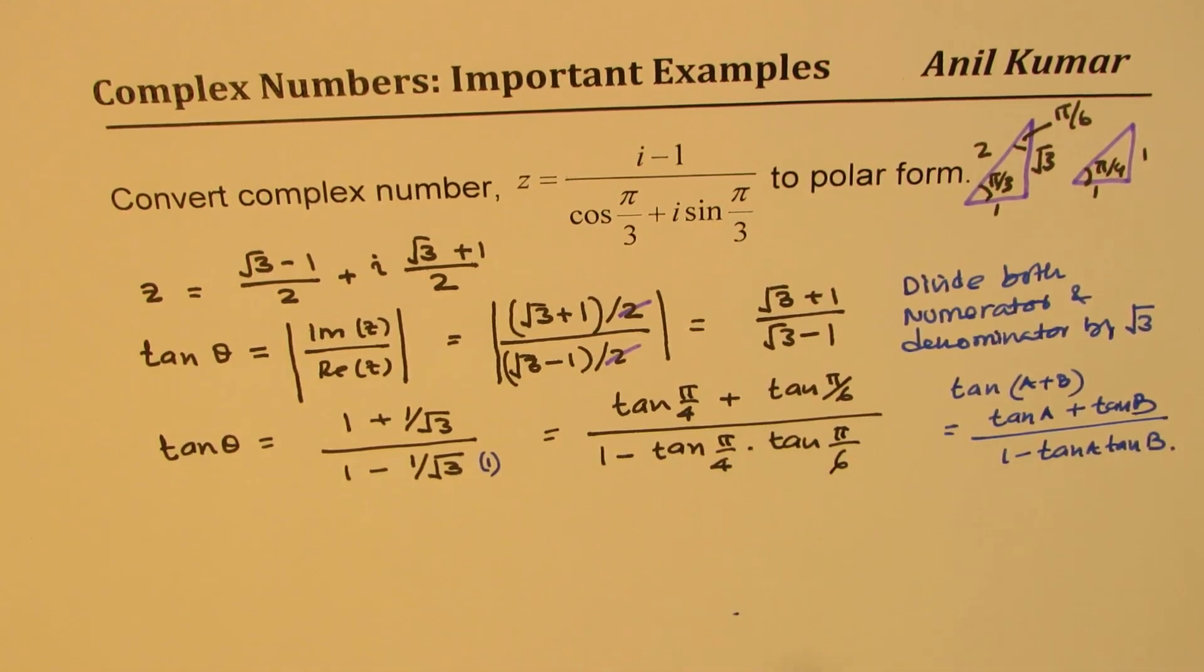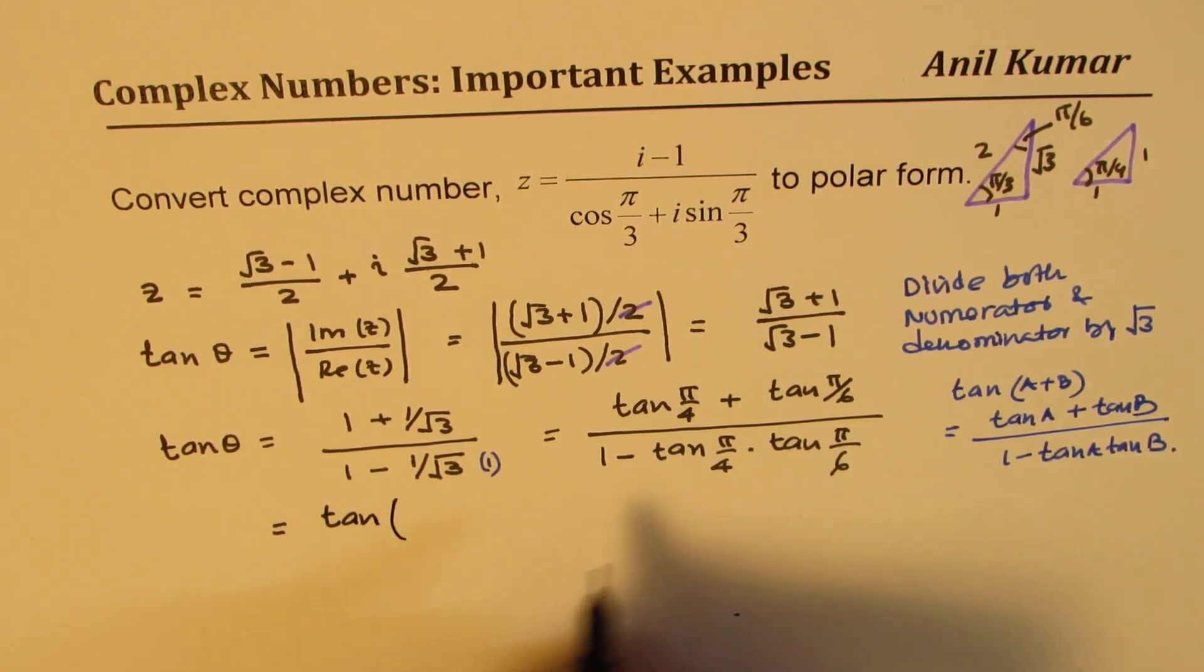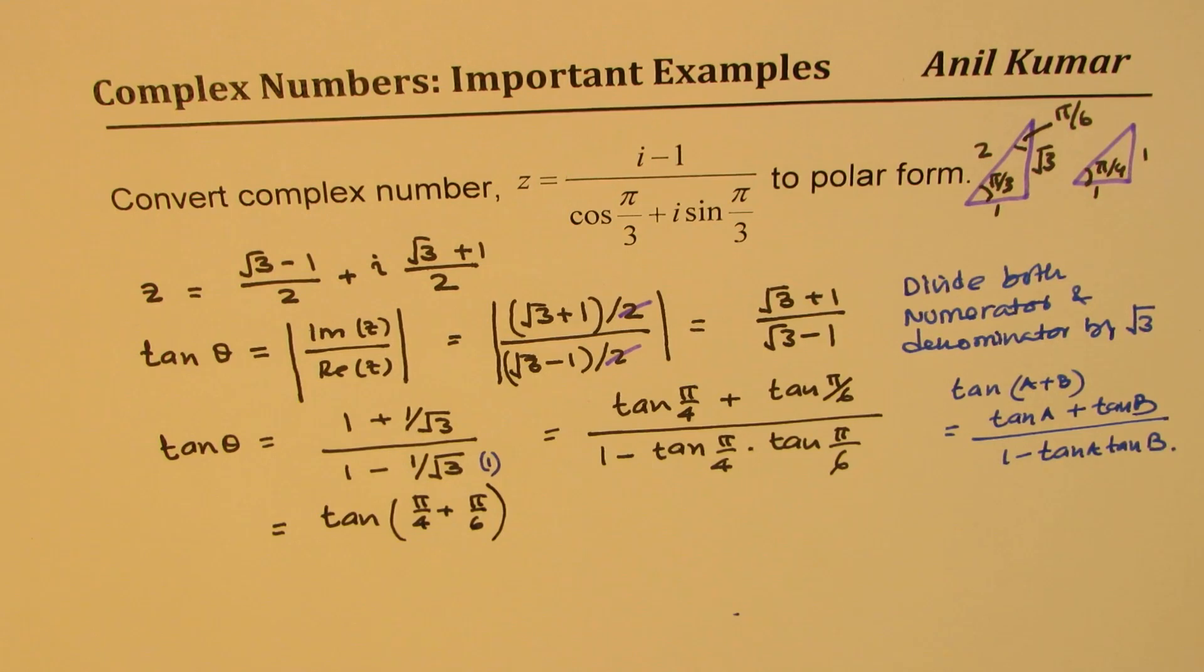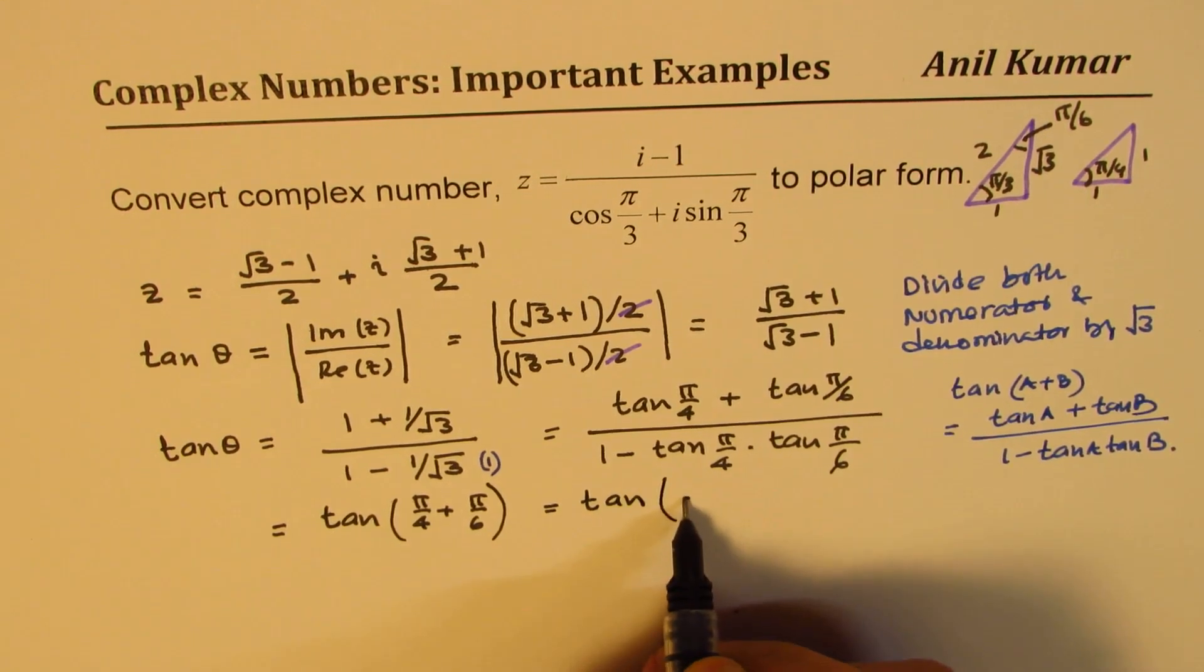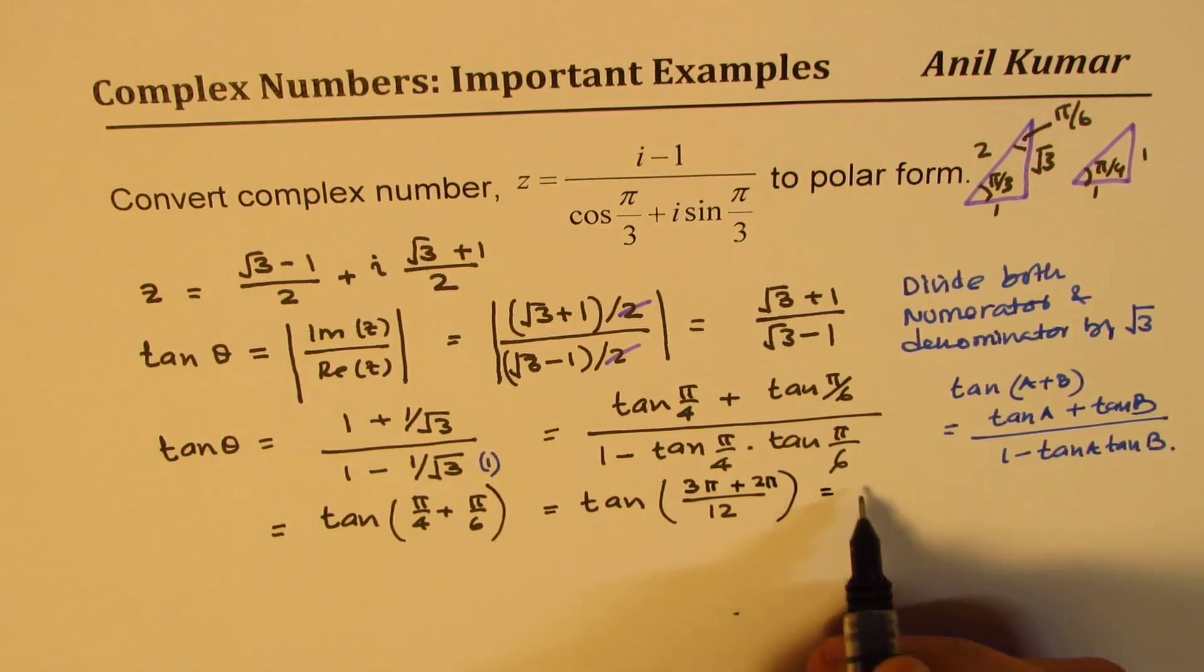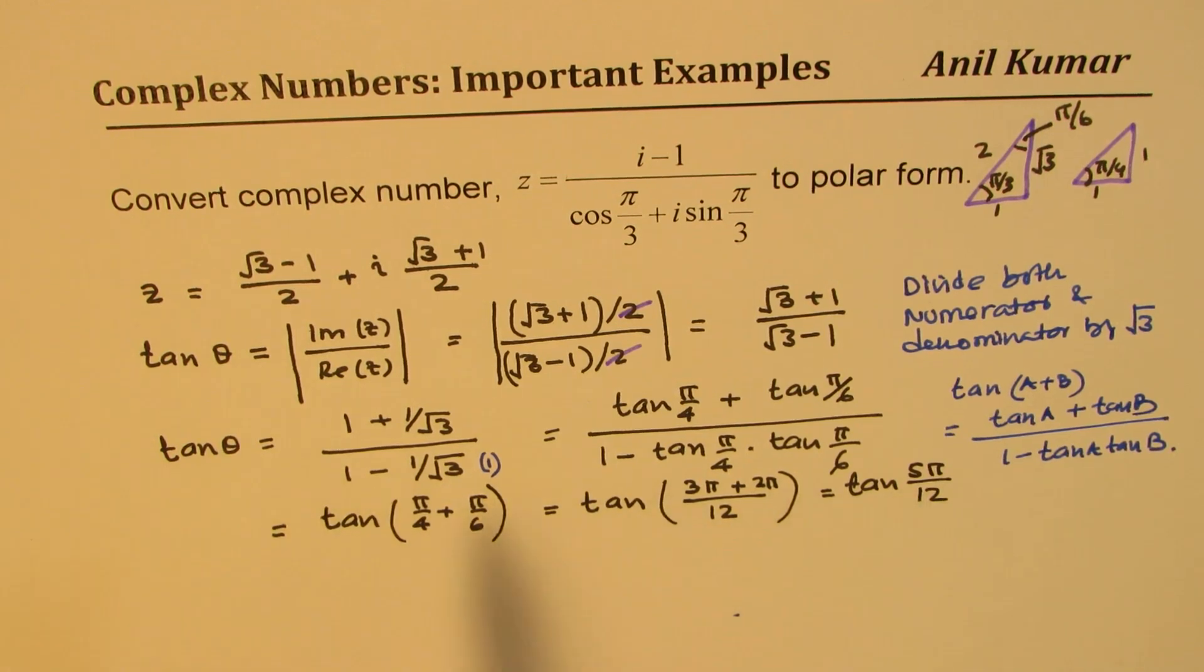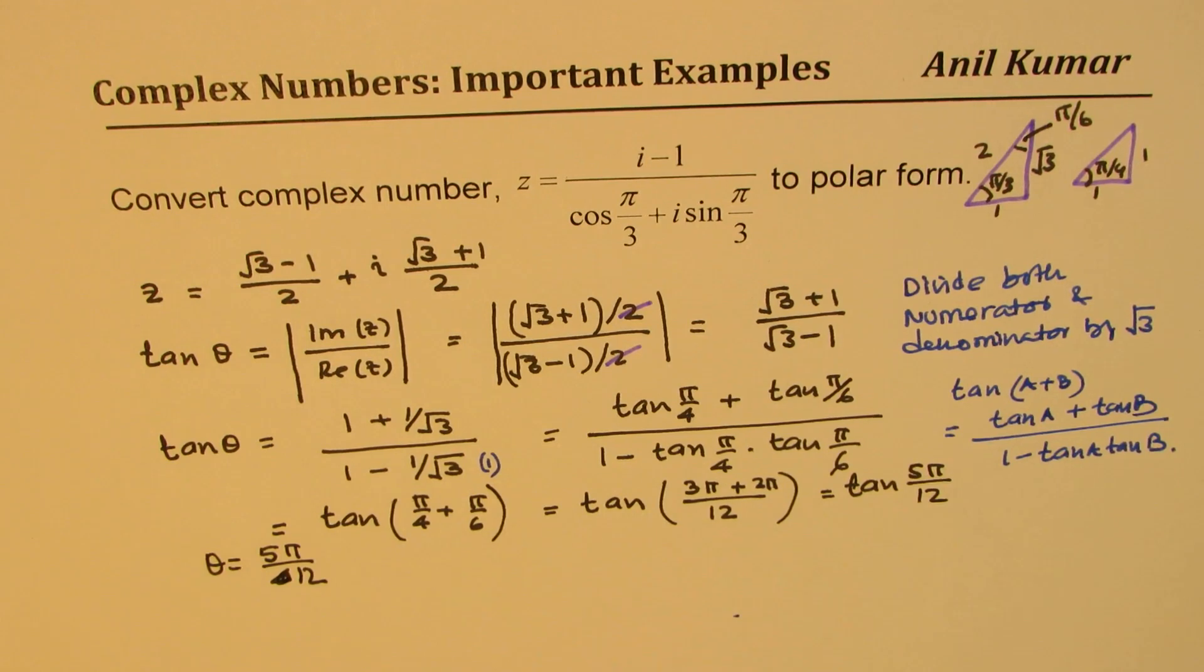Since tan π/4 is 1, we could always multiply and write like this. But that really helps us to give the result, so the angle is basically sum of π/4 and π/6. Now taking common denominators, I could write this as tan of, 12 is my denominator, so I'll multiply this by 3 and that by 2. So this becomes tan of 5π/12. So comparing, we get θ equals 5π/12.